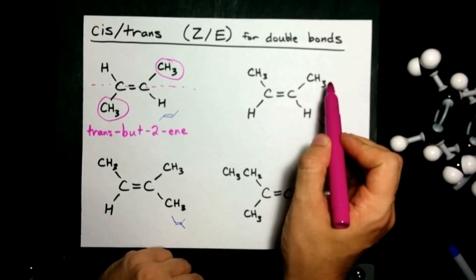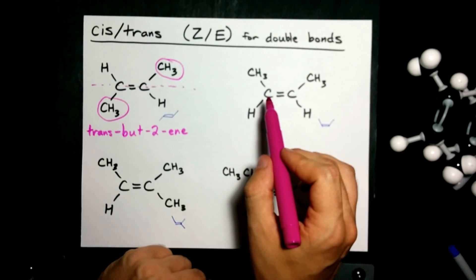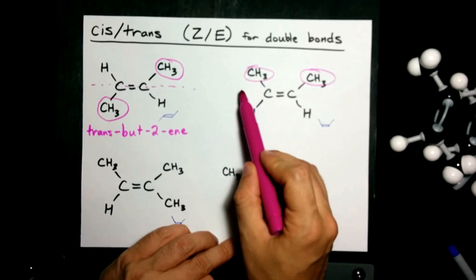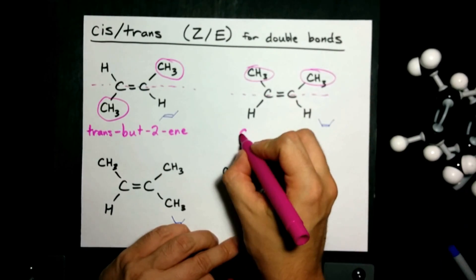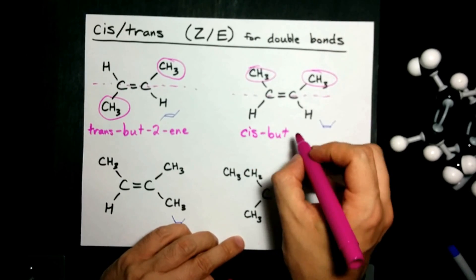Here we have the exact same thing, four carbons in a row with a double bond starting at carbon two, except the CH3 groups are on the same side of the double bond. When they're on the same side, we use the prefix cis.